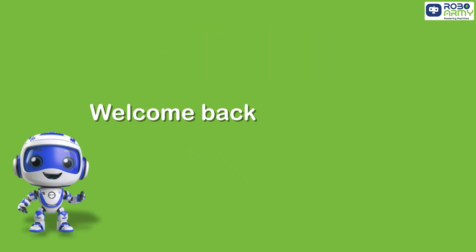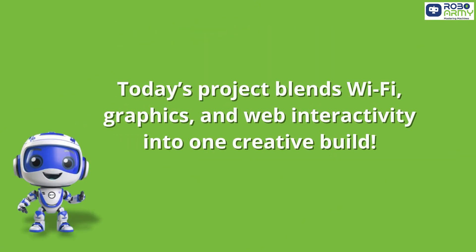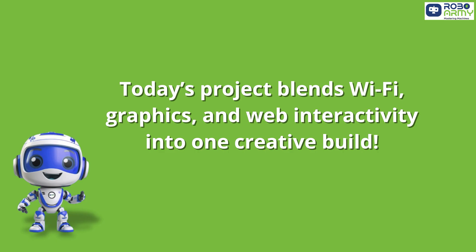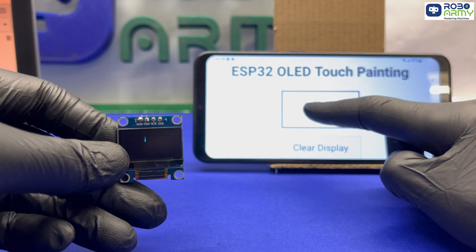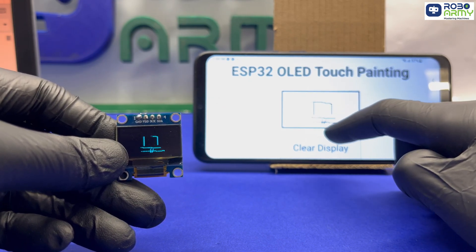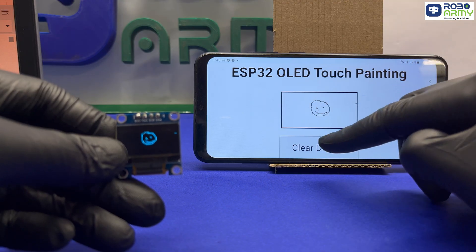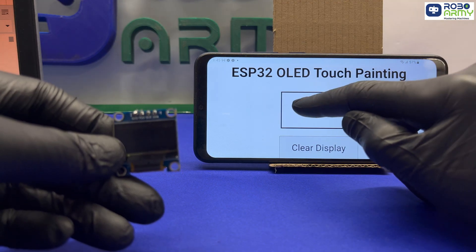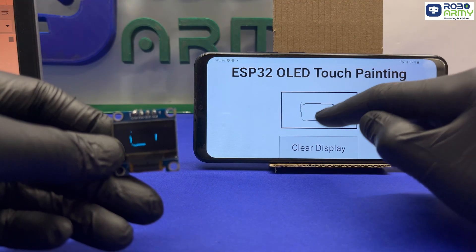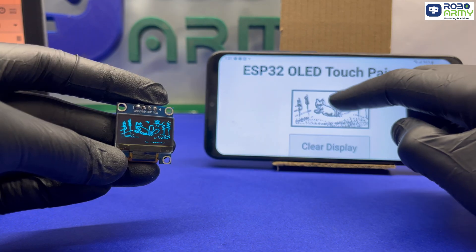Hey everyone, welcome back to RoboRequest — you ask, we built. Today's project blends Wi-Fi, graphics, and web interactivity into one creative build. What if you could draw anything from your phone or tablet and have it instantly appear on the OLED display powered by an ESP32? That's exactly what we are building today: a touch drawing web app hosted right from the ESP32 itself.